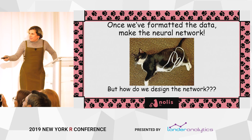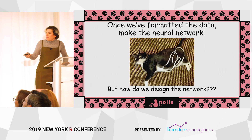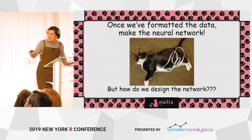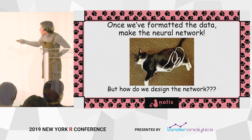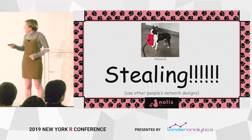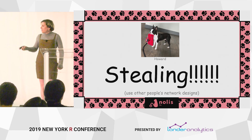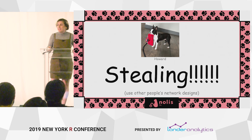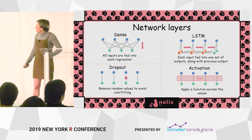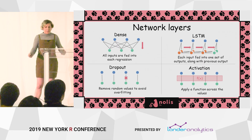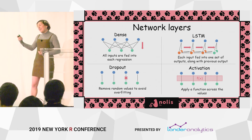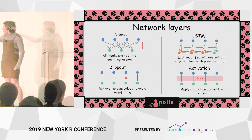We've formatted the data; now it's time to make the neural network. How do we design it? We're going to steal someone else's design for a neural network who's already solved a similar problem, because designing one from scratch is hard — let someone else do that work. Before we get there, let's talk about what the different types of layers are.